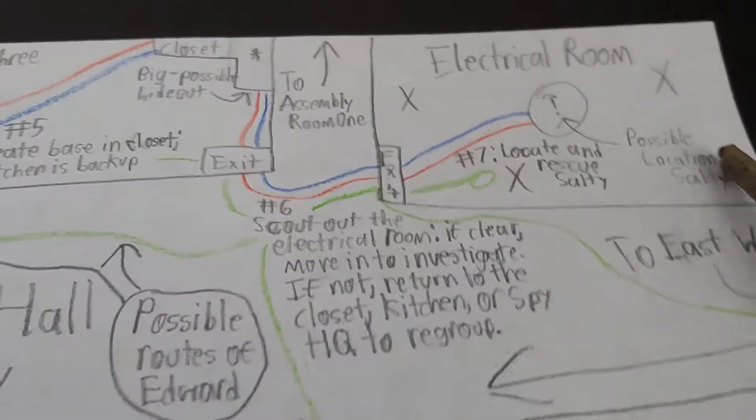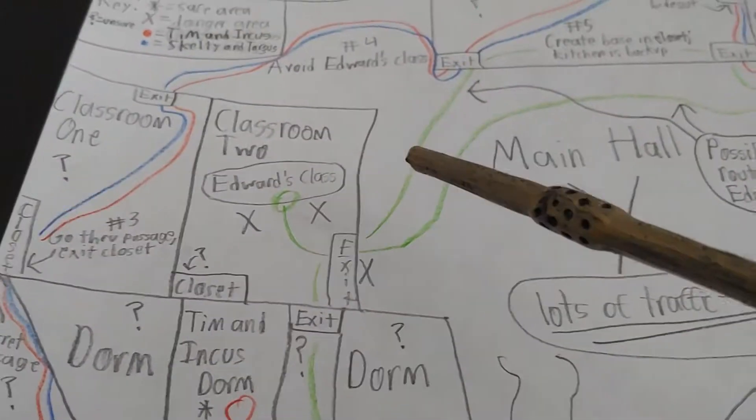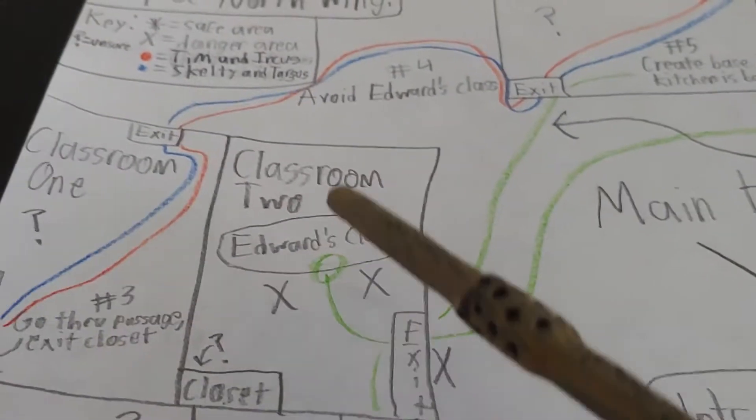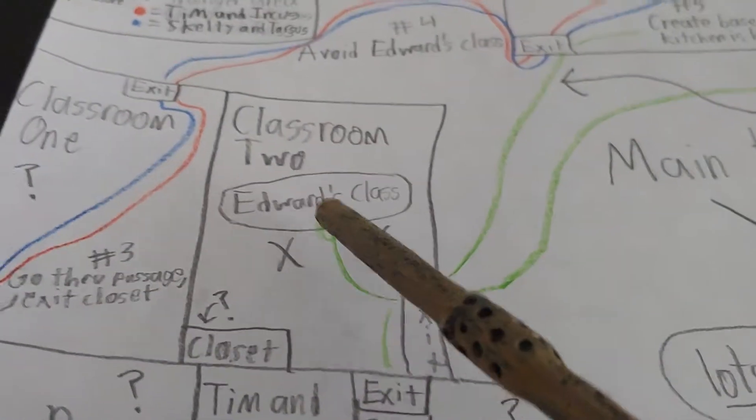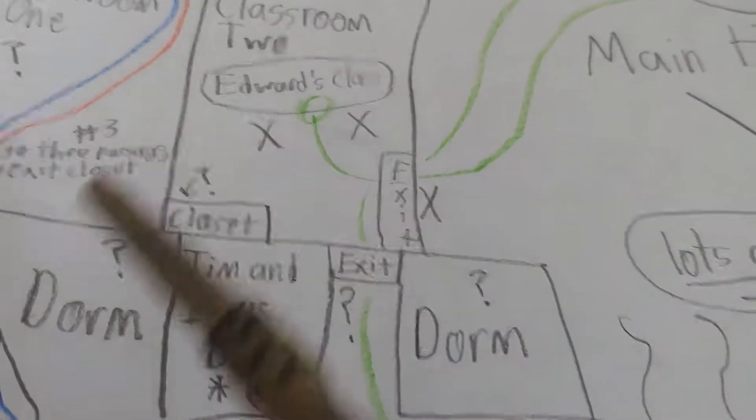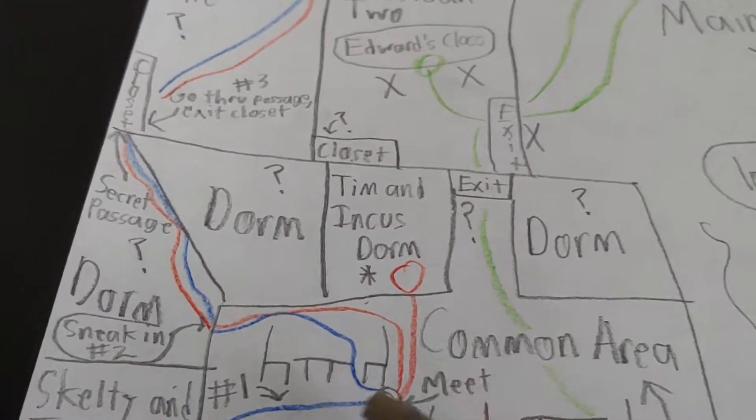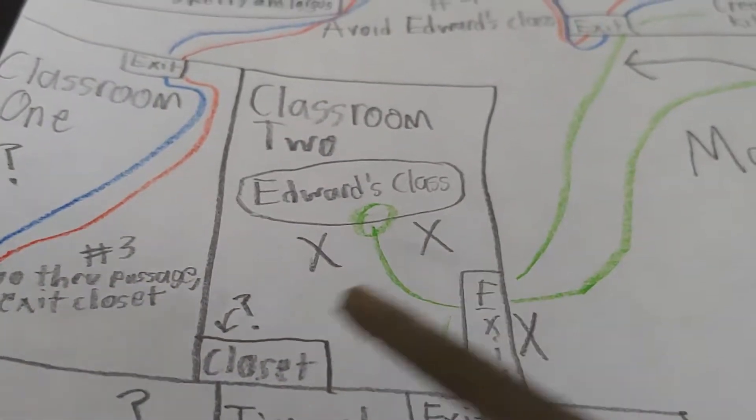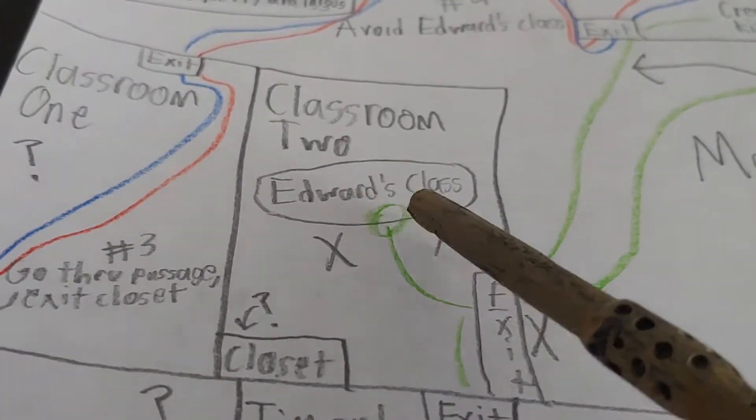But there's a slight issue. We don't know where Edward the train is going to be at all times. Now Edward the train is most likely going to start in his class. There's pretty much a 95% chance he's going to start in his class because this is going to be not too late after classes end for the day. It's about the time when people will be getting out of classes and teachers will be cleaning up.